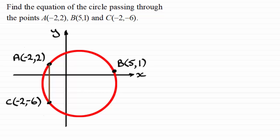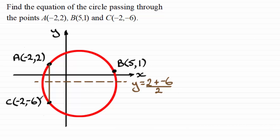So if we mark the chord AC in and find the perpendicular bisector, I need the midpoint of AC. Since it's a vertical chord, I just take the mean of the y-coordinates: (2 + (−6)) / 2 = −4 / 2 = −2. So the equation of the perpendicular bisector is y = −2, and the centre of the circle therefore has a y-coordinate of minus 2.